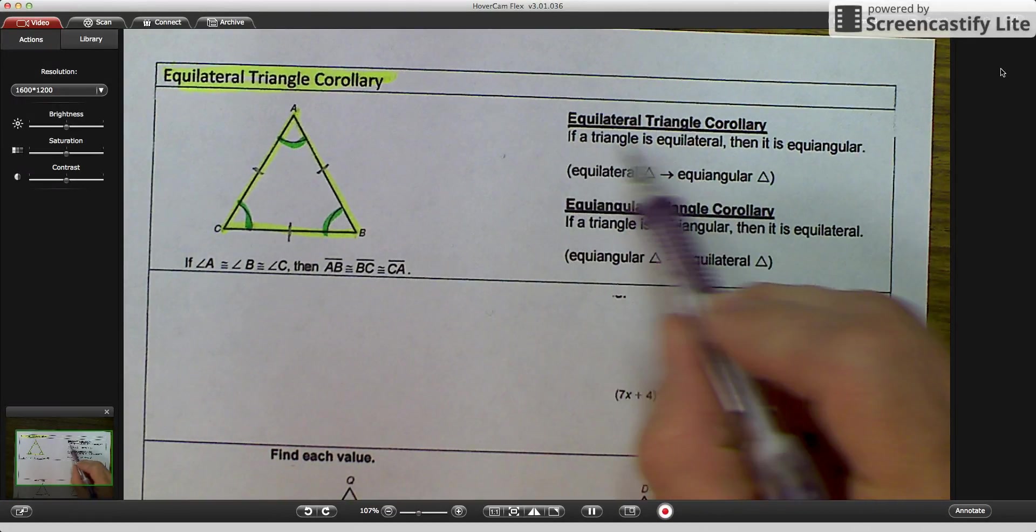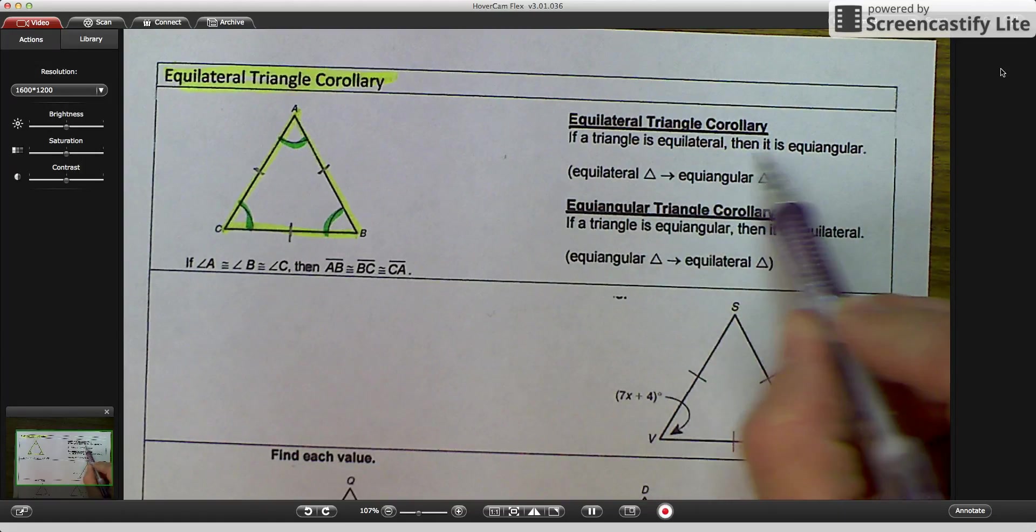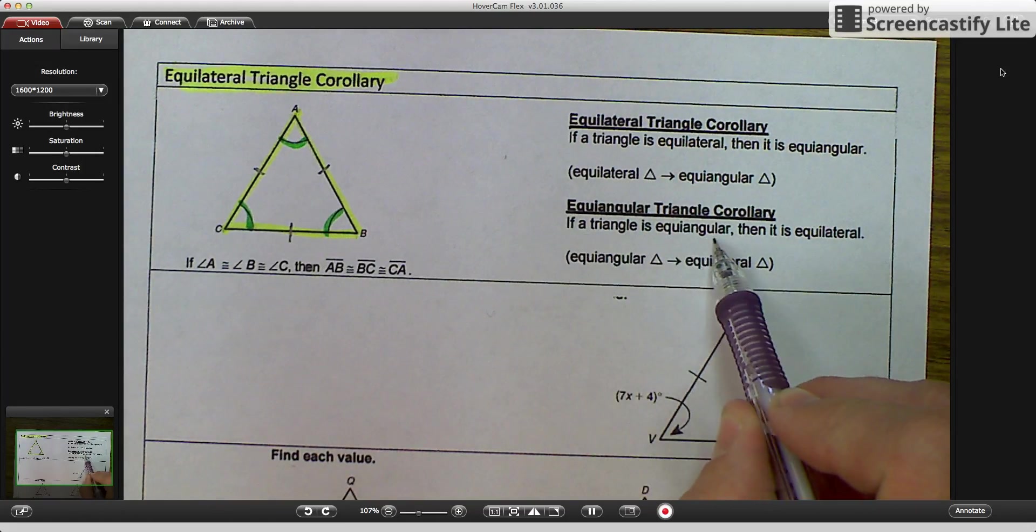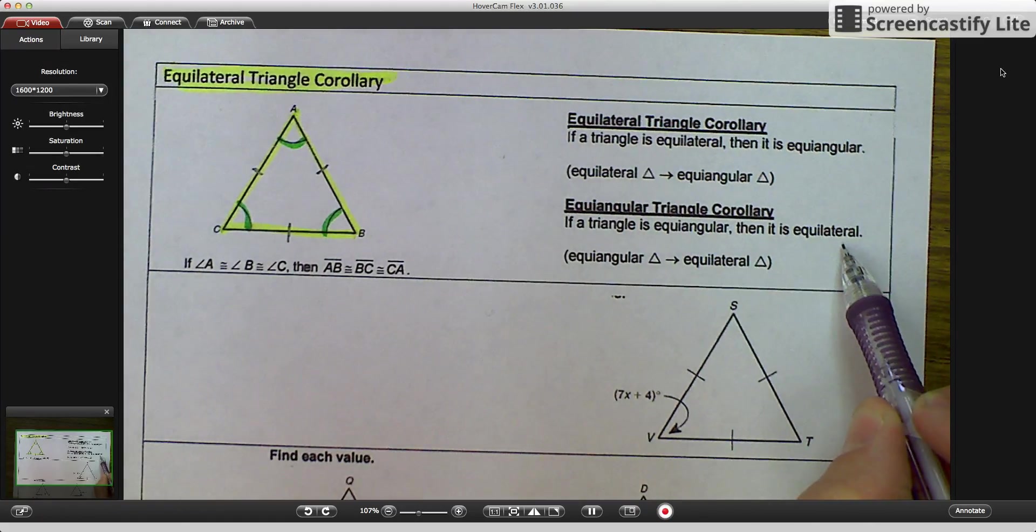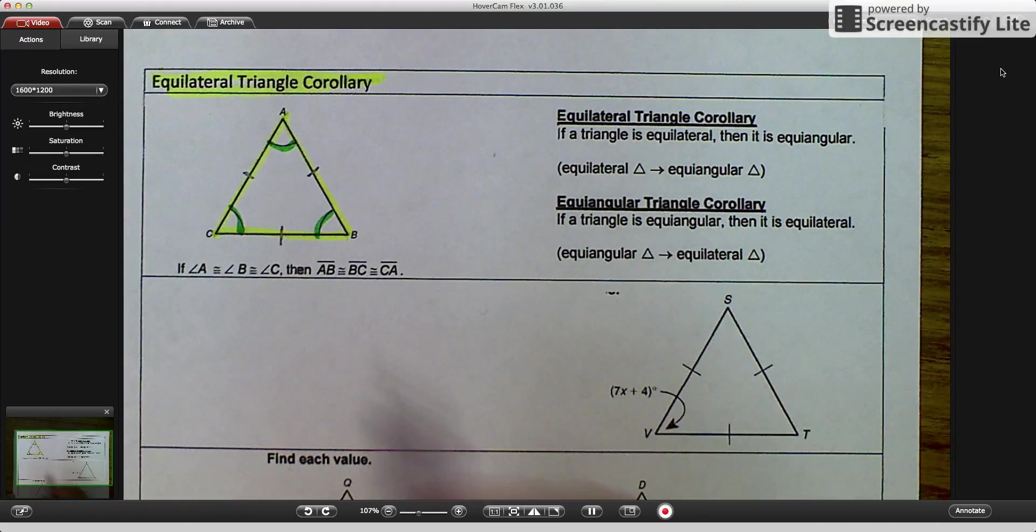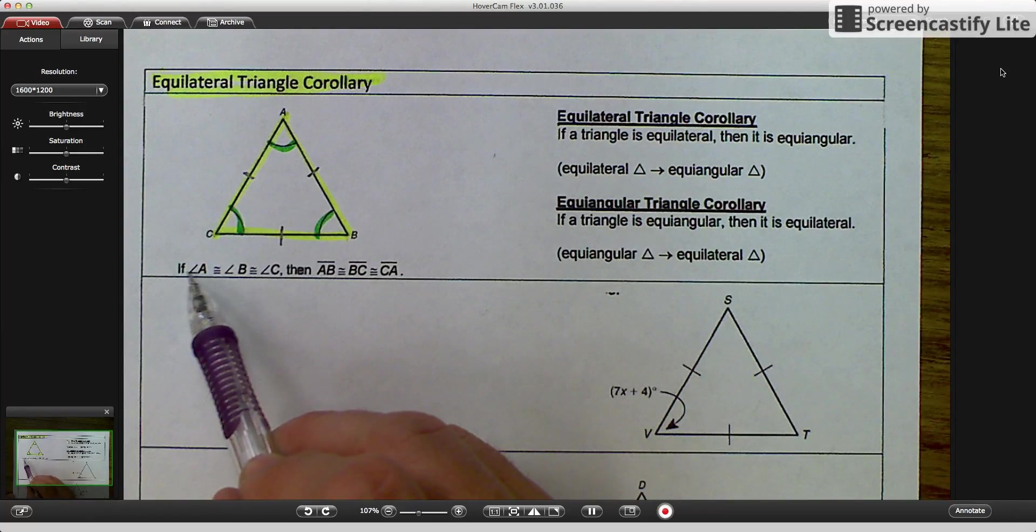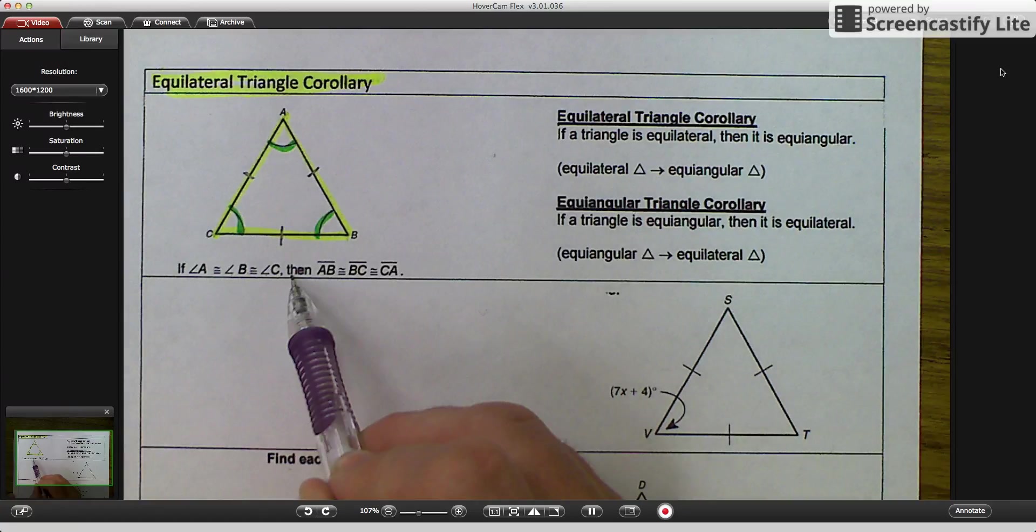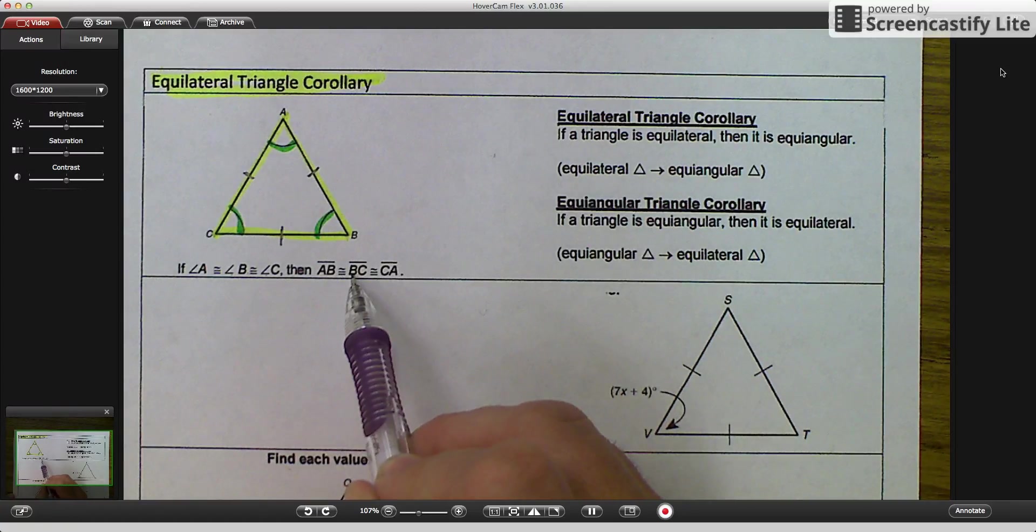And what it says is if a triangle is equilateral, then it is equiangular. Or it says if a triangle is equiangular, then it is equilateral. So again, the same thing, and this is your congruence statement. If angle A is congruent to angle B, which is congruent to angle C, then AB is congruent to BC, which is congruent to CA.